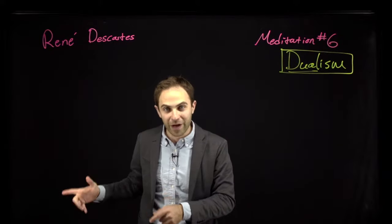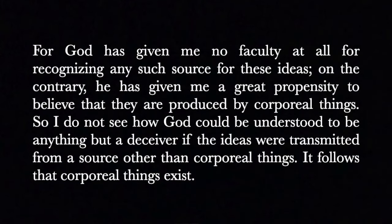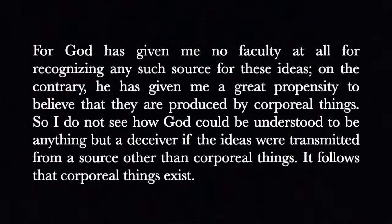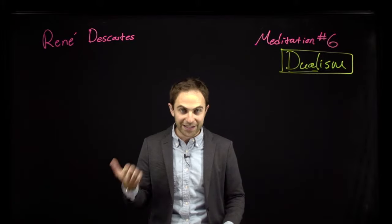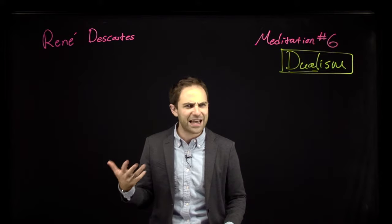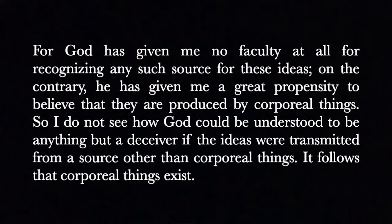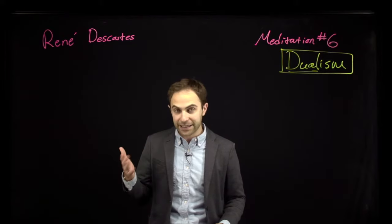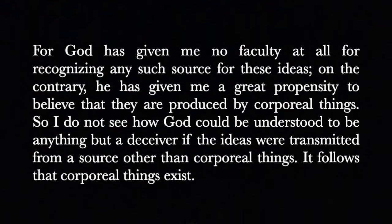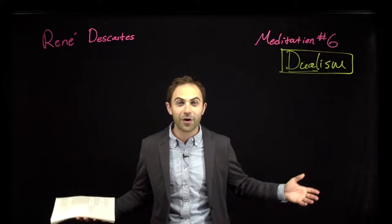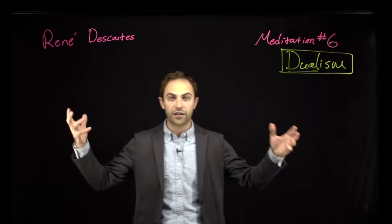He has an inclination — a great propensity — to believe that the ideas in his mind of physical things actually come from physical things, and he has no way of double-checking. 'I do not see how God could be understood to be anything but a deceiver if the ideas were transmitted from a source other than corporeal things. It follows that corporeal things exist.' If these ideas didn't come from physical things, God would be a deceiver — and God isn't — so corporeal things exist. That's the proof for the existence of physical objects in the world.